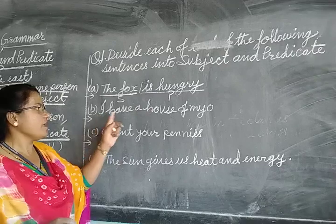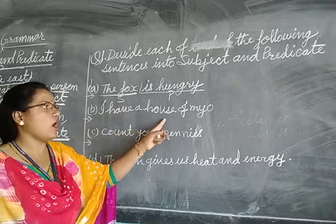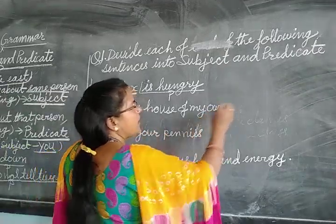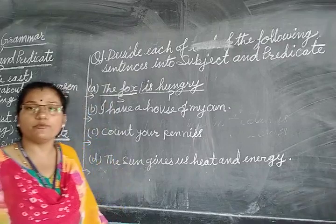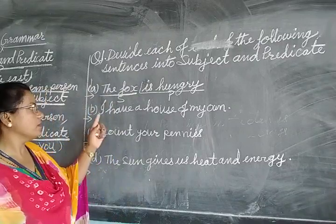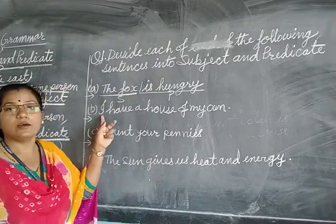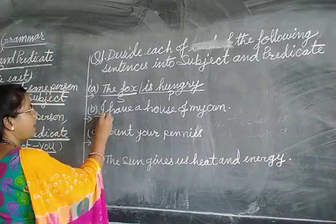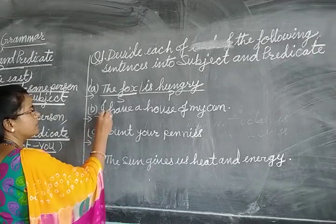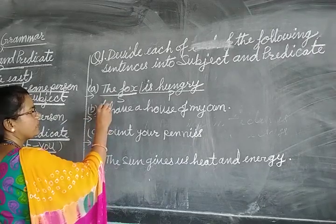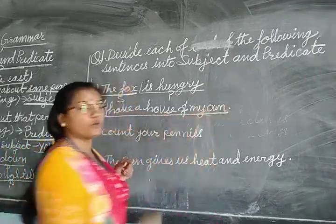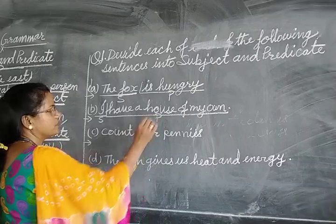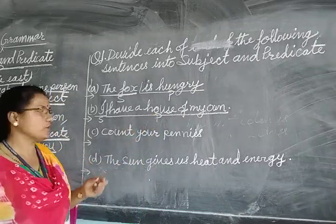Next: 'I have a house of my own.' We are talking about 'I,' myself. So 'I' is the subject. What we are saying? 'Have a house of my own' — that is the predicate.